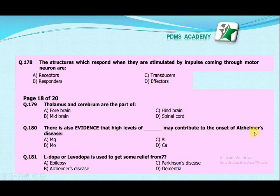The options are: magnesium, molybdenum, aluminum, or calcium? The correct answer is aluminum. There is evidence that high levels of aluminum may contribute to the onset of Alzheimer's disease. To get some relief from epilepsy — is it AIDS, Parkinson's disease, dementia? The correct answer is dementia.